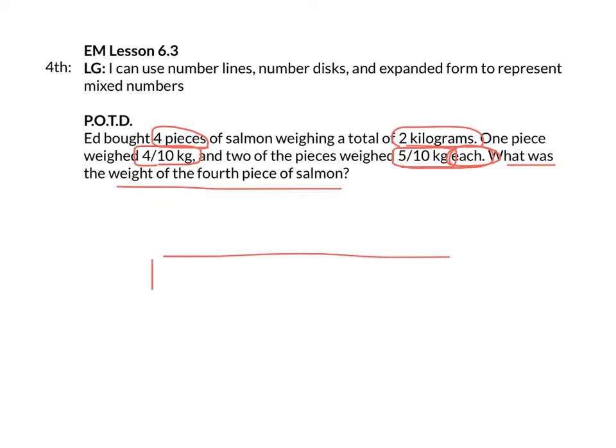So if we draw a picture, we know that all together there were four pieces of salmon, and all four pieces weighed two kilograms altogether. The first piece weighed 4/10 of a kilogram, the next piece weighed 5/10, and the next piece also weighed 5/10. We're trying to find out how much that last piece cost. So we could add up 4/10 plus 5/10 plus 5/10, and then subtract it from two and get the answer, right?